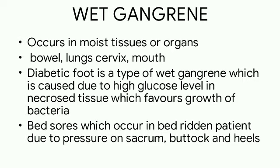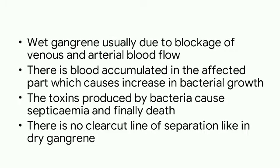Wet gangrene occurs in moist tissues or organs like the bowel, lungs, cervix, and mouth. Diabetic foot is a type of wet gangrene caused by high glucose levels in the necrotic tissue, which favors bacterial growth. Bed sores, occurring in bedridden patients due to pressure on the sacrum, buttocks, and heels, also cause wet gangrene. Wet gangrene is usually due to blockade of venous and arterial blood flow, causing blood accumulation in the affected part, which increases bacterial growth. The toxins produced by the bacteria cause septicemia and finally death of the tissue.